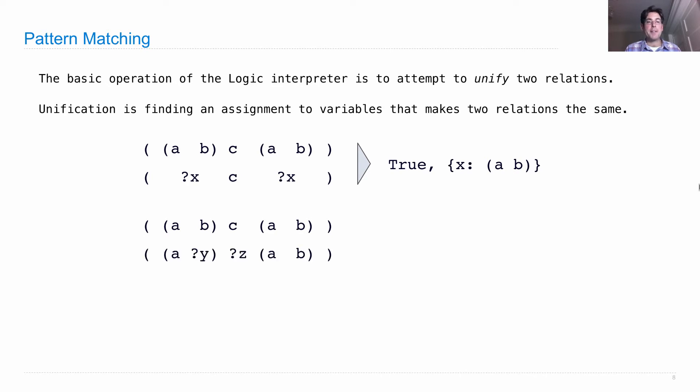What about unifying that same list with something that has two variables, y and z? Well again, I would say this is possible. I need y to be b and z to be c, and then I'm done. These two lists are the same.